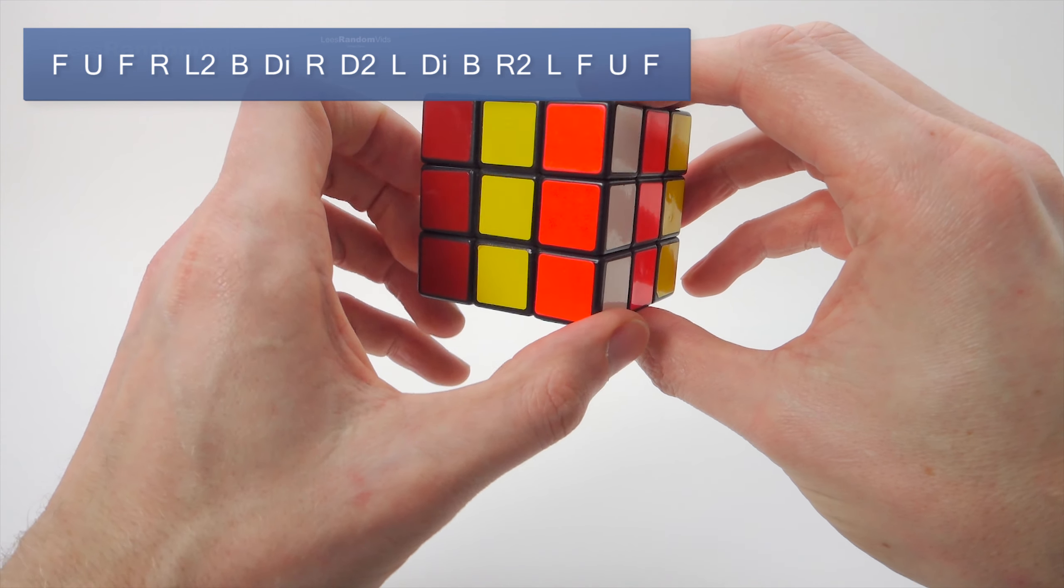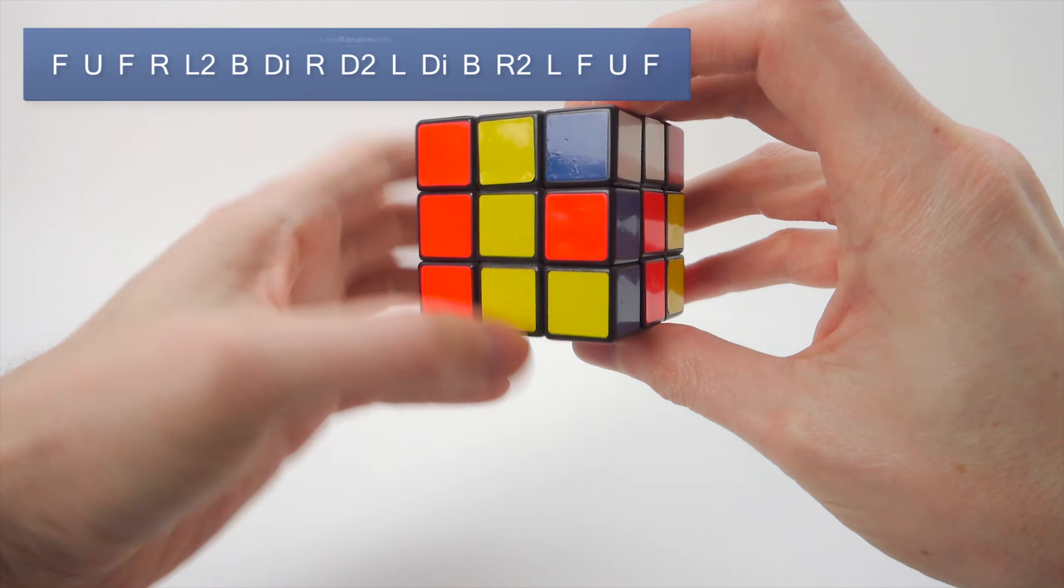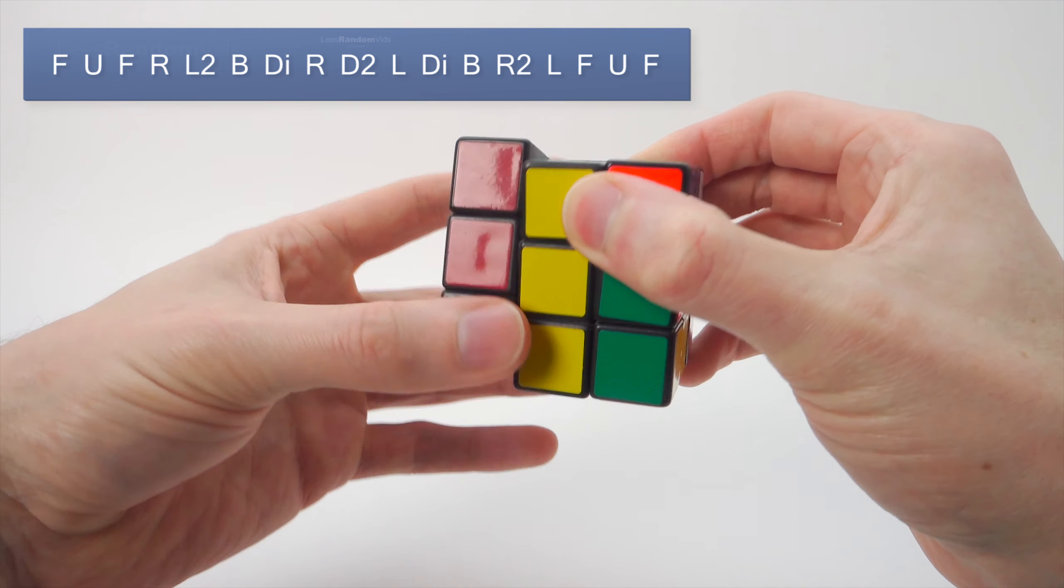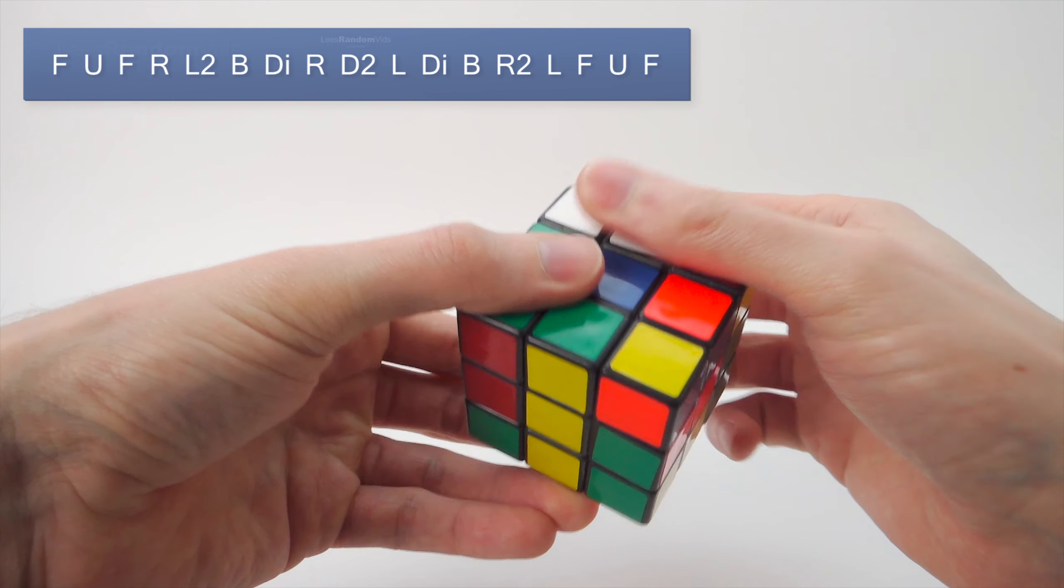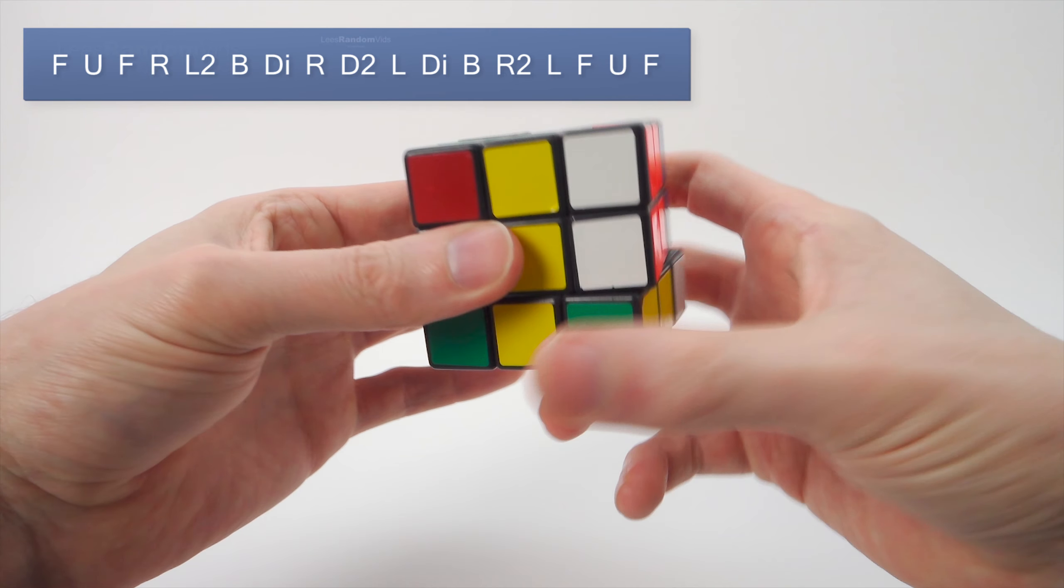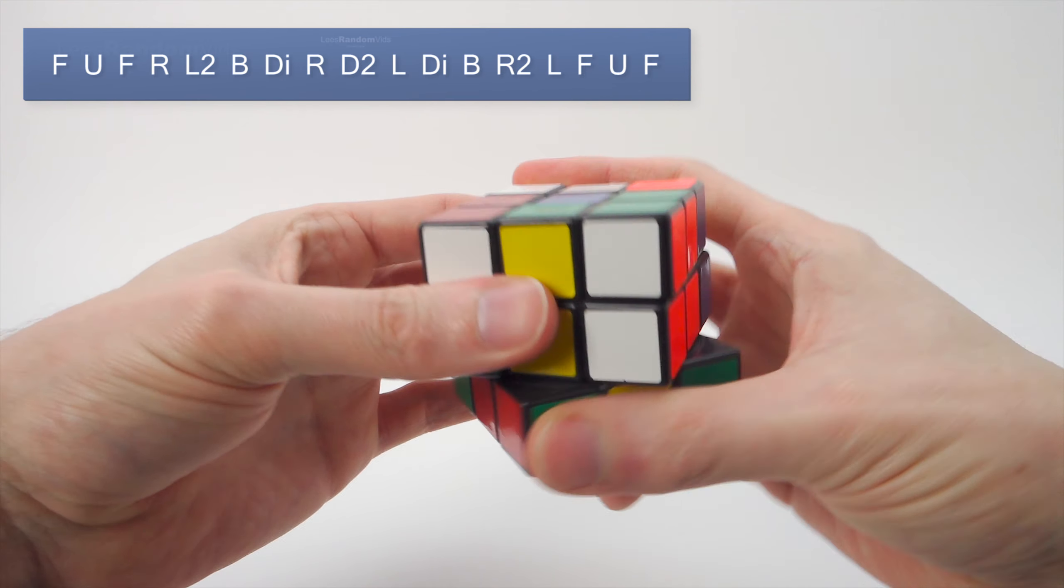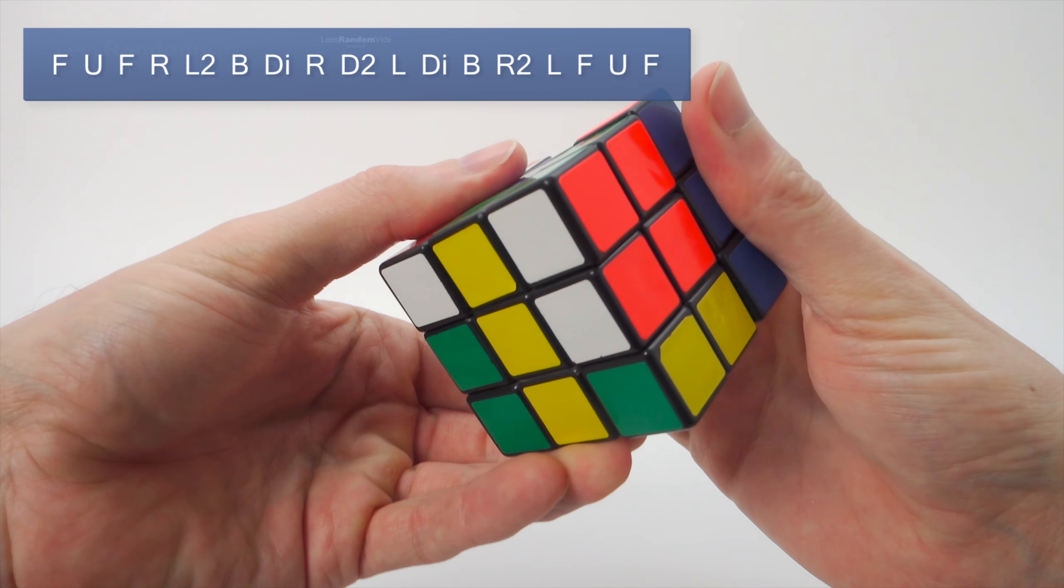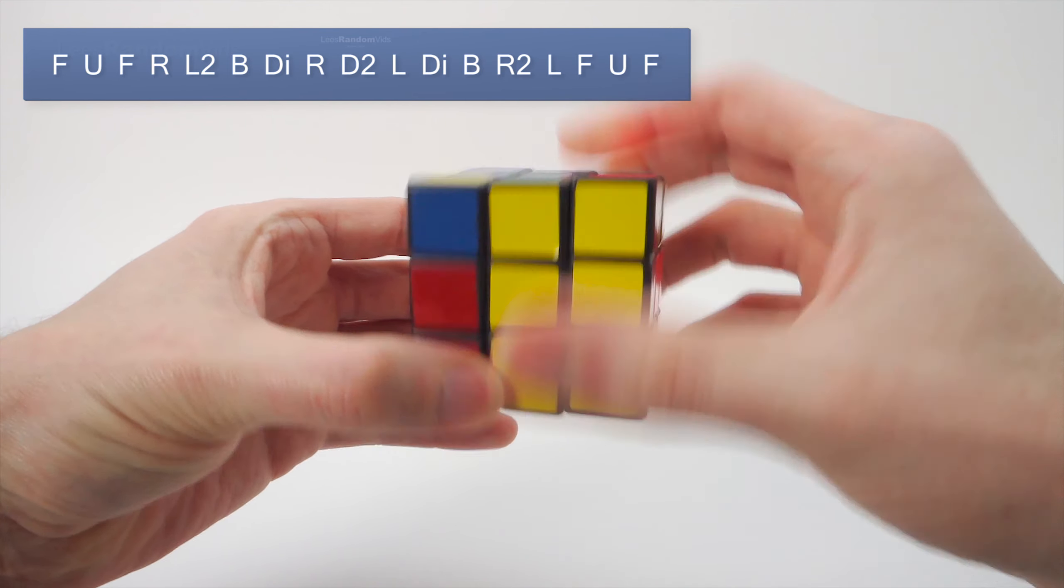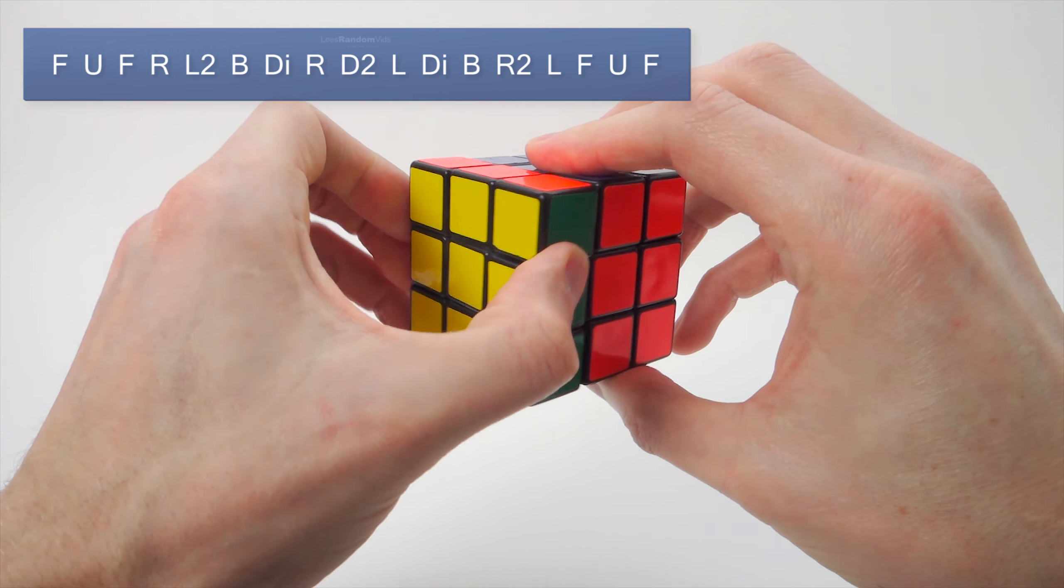So we go F, U, F, R, L2, B, D I, R, D2, L, D I, B, R2, L, F, U, F.